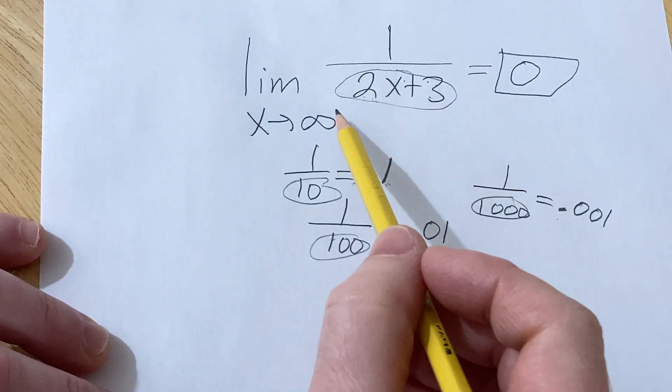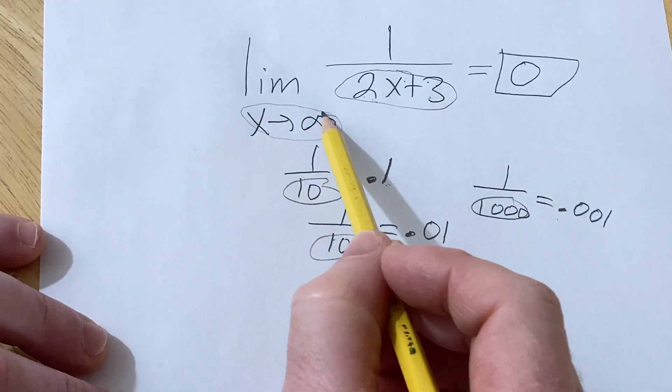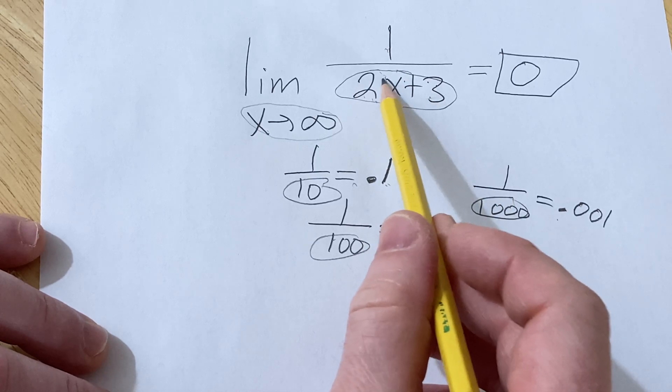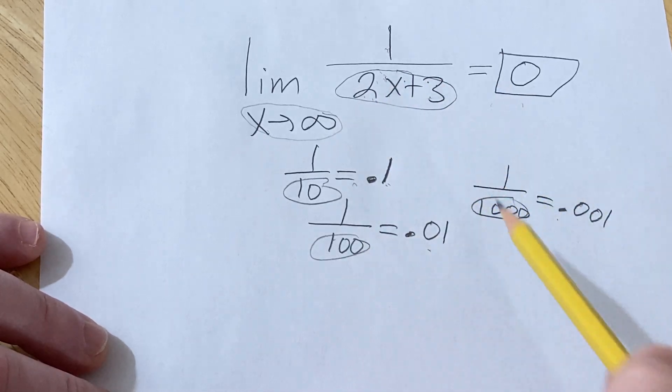So that's what's happening here, right? x is getting bigger and bigger, and this fraction is getting smaller and smaller, and it's approaching 0. And so we say the limit is 0.